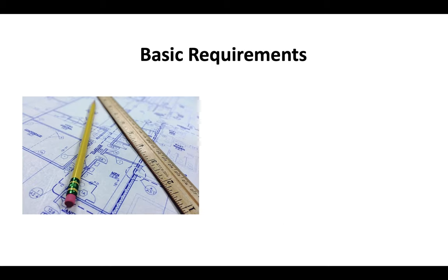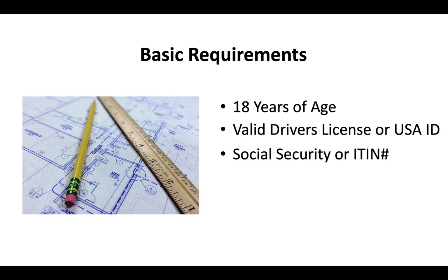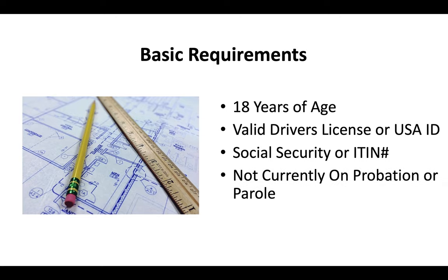The basic requirements for the California General Engineering Contractor license are that you have to be at least 18 years of age to apply, you've got to have a driver's license or US ID, you'll need a Social Security or ITIN number, and you can't currently be on probation or parole.